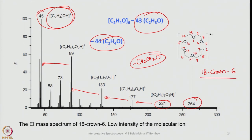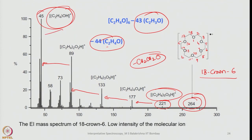We have 6 oxygen atoms. It is ideally suited to accommodate a metal ion with octahedral geometry. In this one, the molecular ion peak is 264. From this it loses 43 mass units corresponding to C2H3O, giving a peak at 221, and then incrementally it loses 44 due to C2H4O regularly until it arrives at the last peak with an M/Z value of 45, that is C2H4OH+. Wherever we have this CH2O unit, one can see the fragmentation follows this sequence.